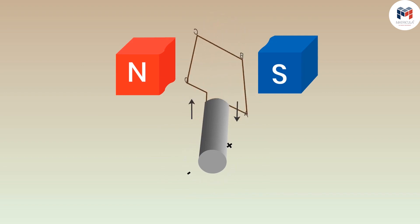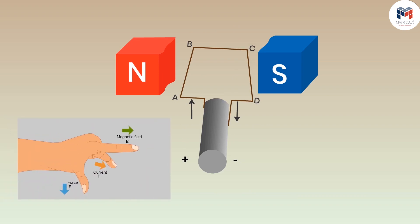If we apply Fleming's left hand rule on the arm AB of the coil then we get the direction of the force exerted on this arm by the magnet. We know that the direction of the magnetic field is from north to south.